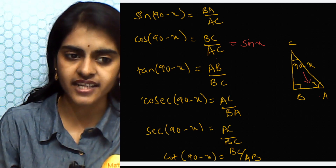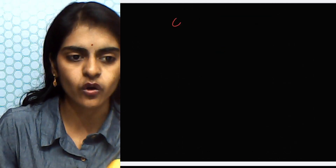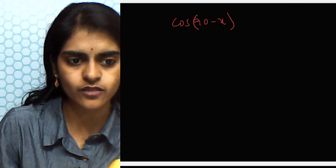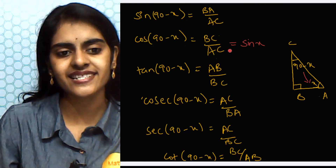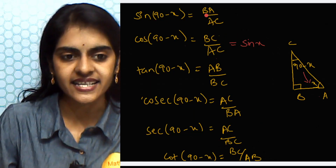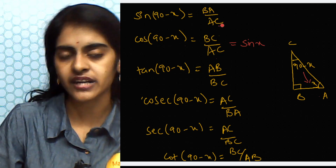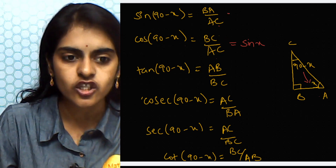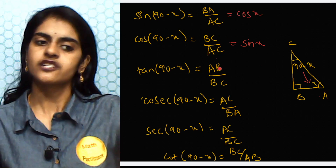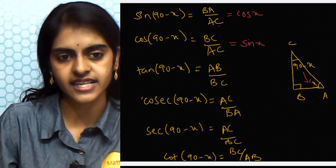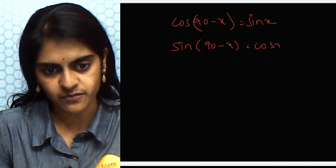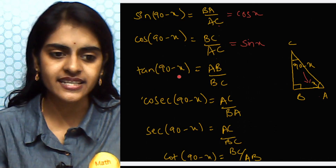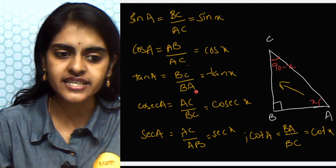Let me write that: cos(90° − x) = sin x. Next, cos x = AB/AC. Looking at the (90° − x) ratios, sin(90° − x) = BA/AC, which is the same as AB/AC. Therefore, sin(90° − x) = cos x.